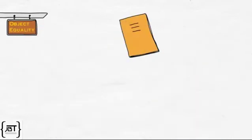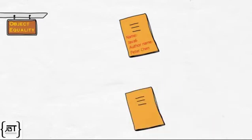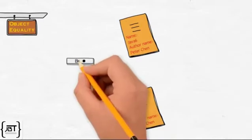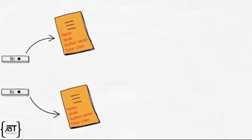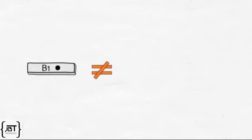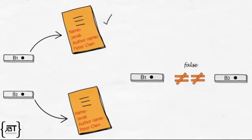Object equality: consider two different objects of the Book class, both having the same values for the name and author. Since b1 and b2 are reference variables pointing to different objects, b1 == b2 will return false. But since both objects have the same name and author, we decide to treat them as equal.